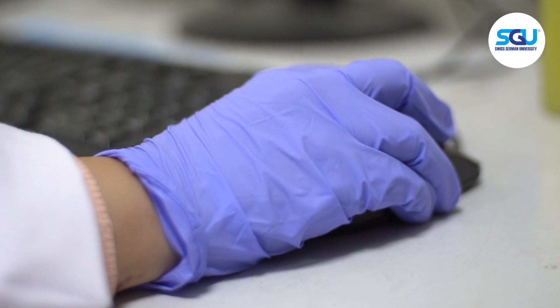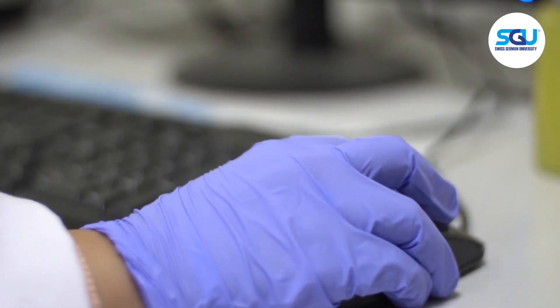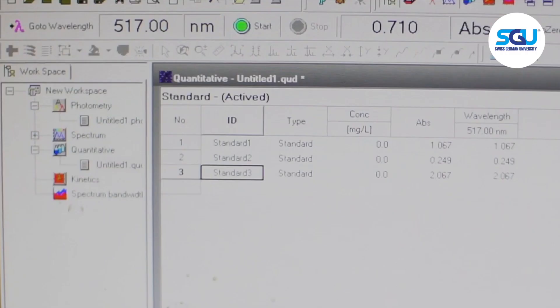In the instrument, color intensity is indicated by the absorbance value. This is the result. Standard 1 is fruit juice with an absorbance of 1.067. Standard 2 is commercial vitamin C drink with an absorbance of 0.249. Standard 3 is the control DPPH with an absorbance of 2.067.